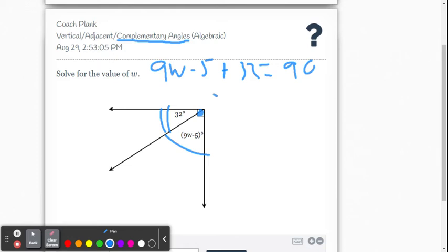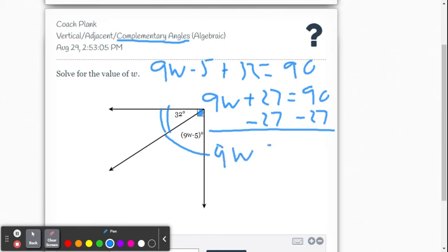Now we're going to combine like terms, so we get 9W plus 27 equals 90. Now we want to isolate the W, so we're going to remove that 27 by adding the opposite, which is negative 27, or some of you think of it as subtract 27 from both sides. So then we get 9W equals 63, and now we're going to divide both sides by 9, because we want 1W. We already know 9 over 9 becomes a 1 on the left side, so we get W equals 7.